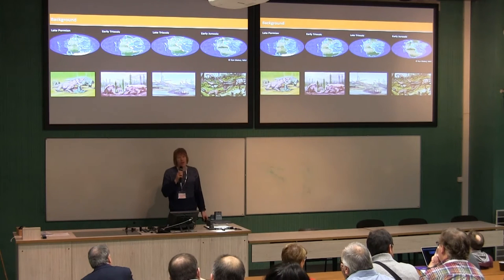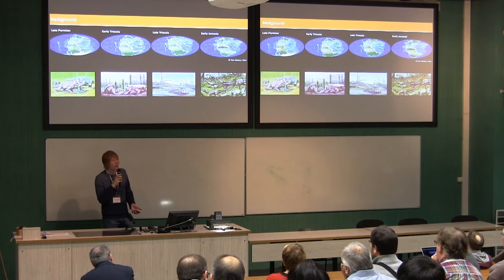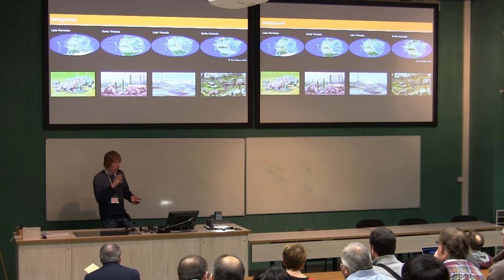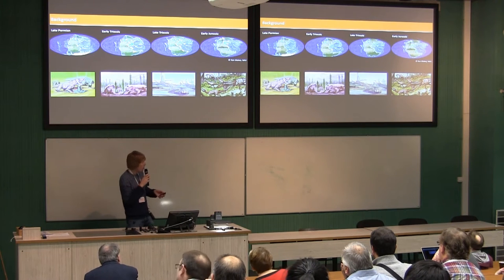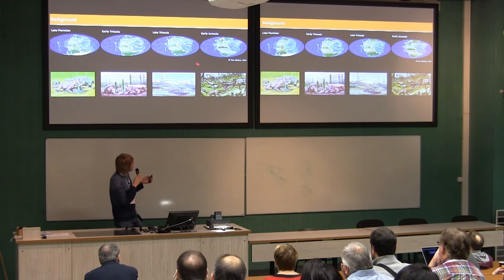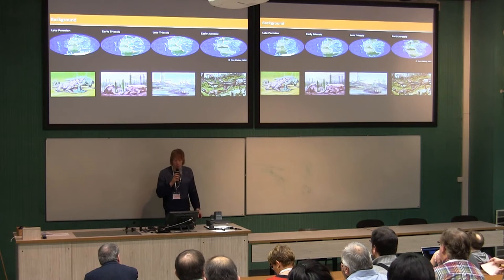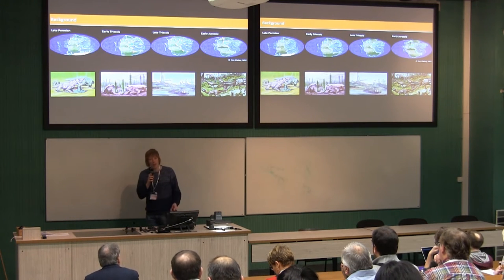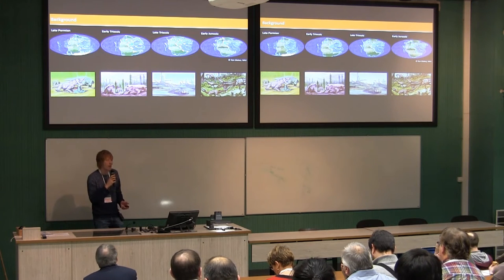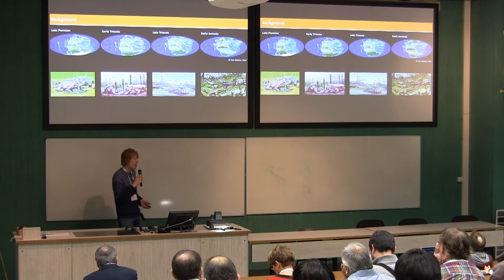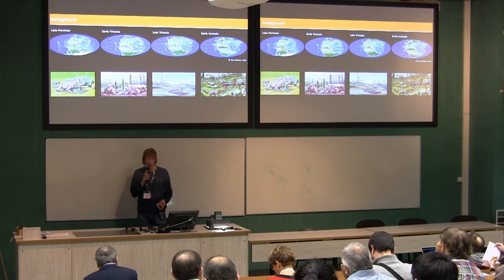These two mass extinction events are separated by the 50 million years of the Triassic period, and from a biogeographical point of view, this is an interesting period of Earth history due to the presence of the supercontinent Pangaea, which only began to break up about the end of the Triassic as the Atlantic Ocean started to form. On a supercontinent, we might perceive there should be relatively few barriers to dispersal due to the absence of oceanic barriers, and we might expect a relatively cosmopolitan fauna.